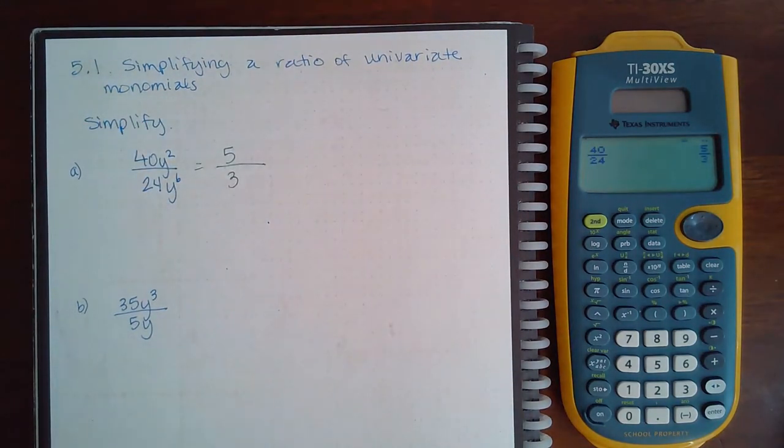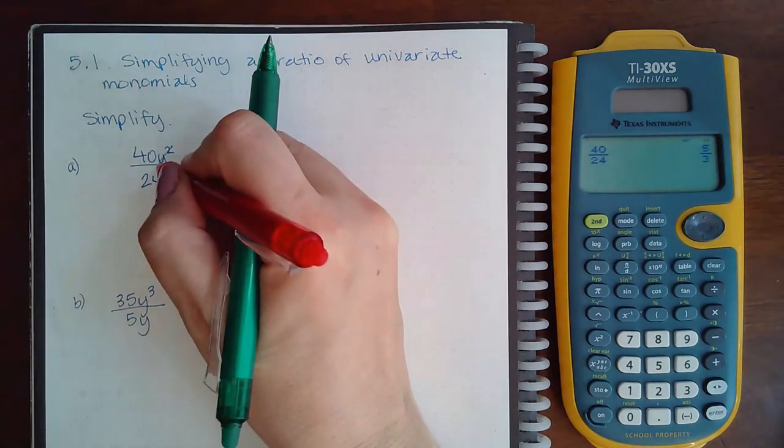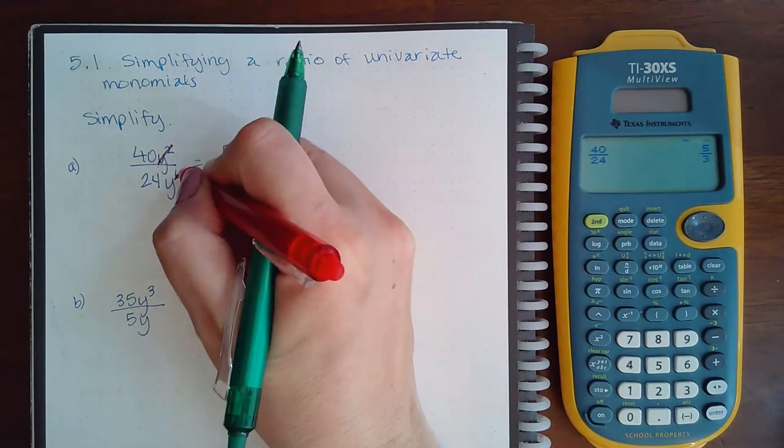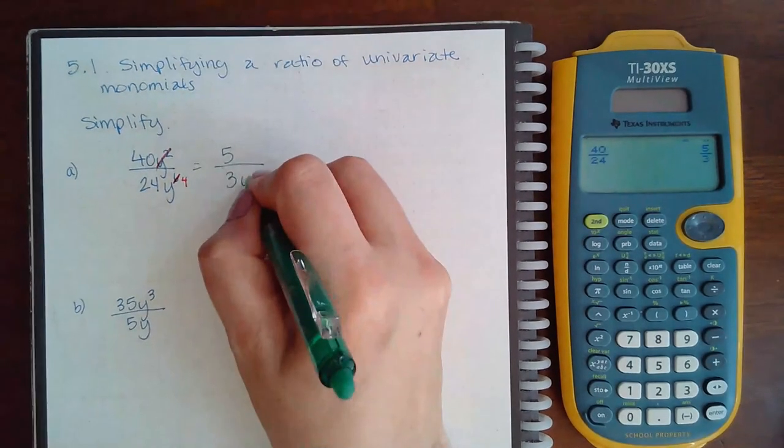Now the variables you can reduce. So if I want to cancel out two y's up top, I can cancel out two y's at the bottom, but I'll still be left with four at the bottom. So we end up with 5 over 3y to the fourth at the bottom.